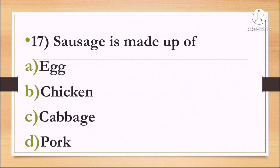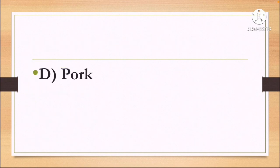Next question: sausage is made up of — Option A: Egg, Option B: Chicken, Option C: Cabbage, and Option D: Pork. The correct answer is Option D, Pork. Sausage is made up of Pork.